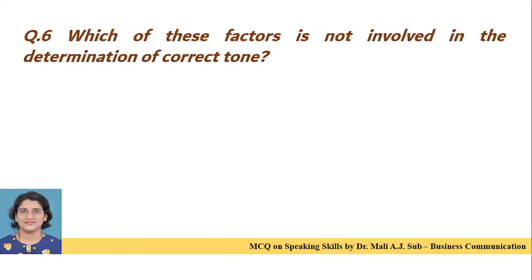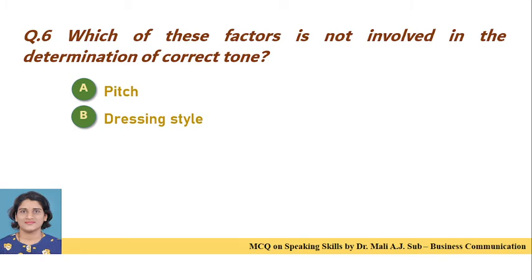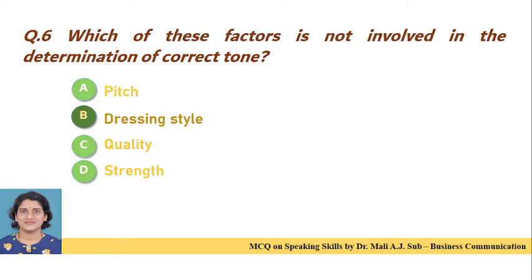Question 6: Which of these factors is not involved in the determination of correct tone? Option A: pitch. Option B: dressing style. Option C: quality. Option D: strength. Correct answer is Option B — dressing style is not involved in the determination of correct tone.